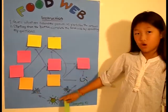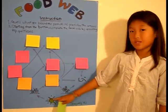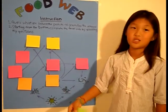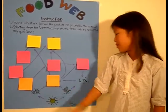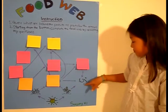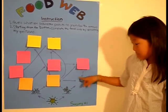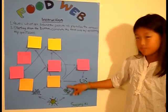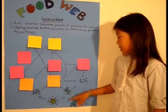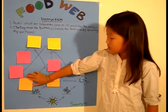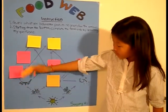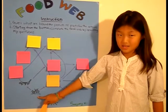Bean plant also gets energy from the sun because it's a kind of plant. Bacteria eats a plant. A grasshopper eats grass.